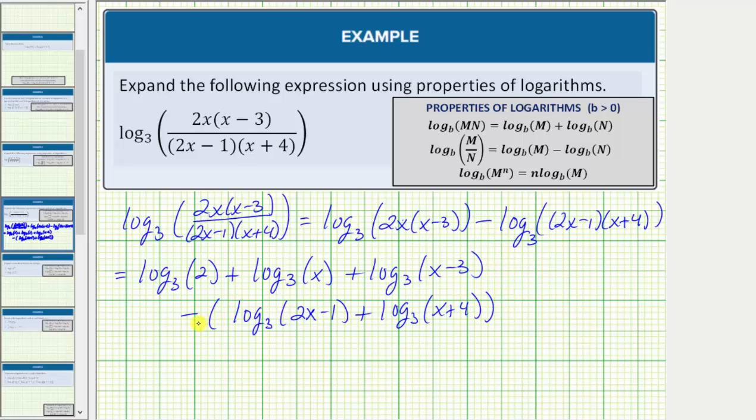But for the last step, let's clear these parentheses, and because of the minus, if it's helpful, we can think of distributing a negative one. So the final expansion is log base three of two plus log base three of x plus log base three of the quantity x minus three, and then clearing the parentheses, we have minus log base three of the quantity two x minus one minus log base three of the quantity x plus four.